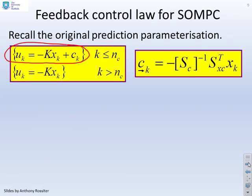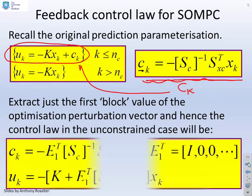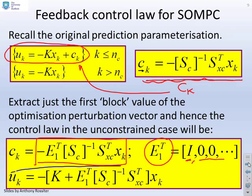And now I know that C is given by minus Sc inverse Sxc times Xk. So if I extract just the first value, I just want Ck from this term up here and then add that into here, this is what I'm going to get. So basically, this E1 transposed, which is I, zero, zero, zero, zero, extracts the first block. In other words, it extracts Ck. So that's given by this expression here. And then if I put that together, then what you find is my resulting control law is this one at the bottom here.